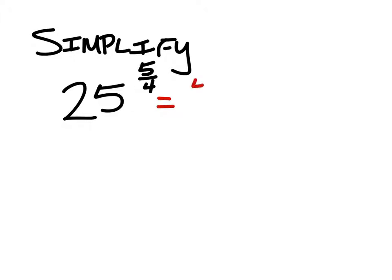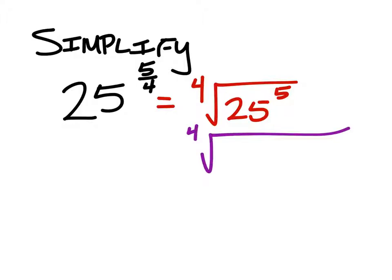This is the same as the fourth root of 25 to the power of 5. Now the fourth root means that we need groups of 4 of the same factor in order to pull it out of the root. So I'm going to change 25 into 25 multiplied by itself 5 times.